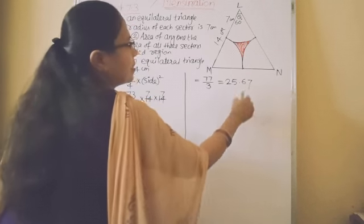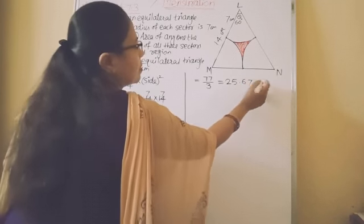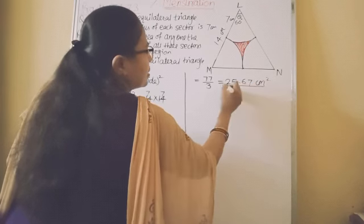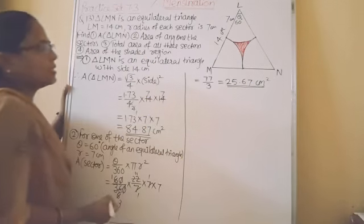So here instead of 6, write 7 centimeter square. So this is the area of one of the sector.